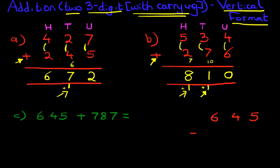Six hundred and forty-five plus seven hundred and eighty-seven. Let's label the columns for this time. We've got units, tens, and hundreds. So let's start the addition.